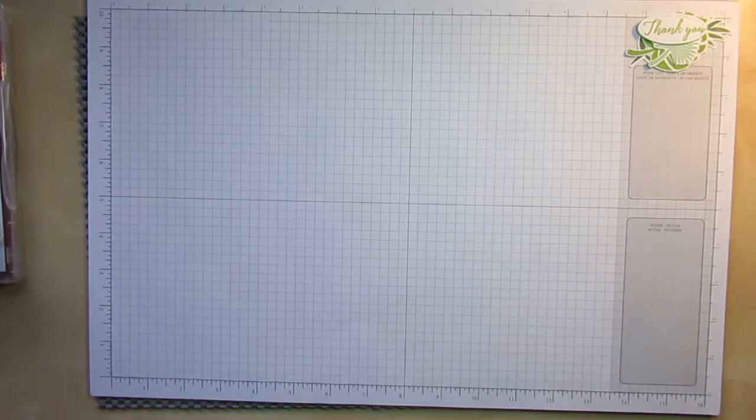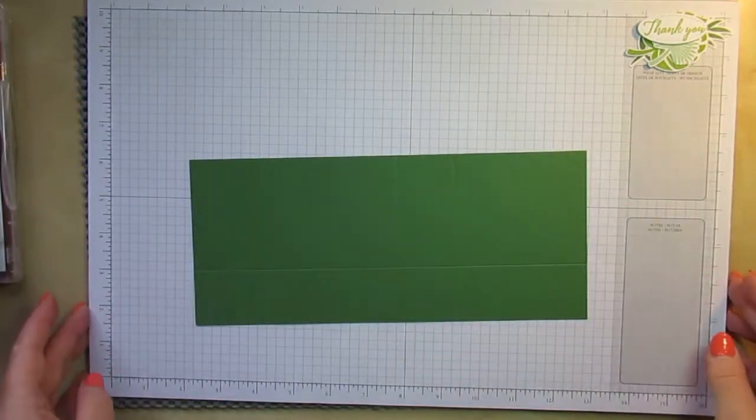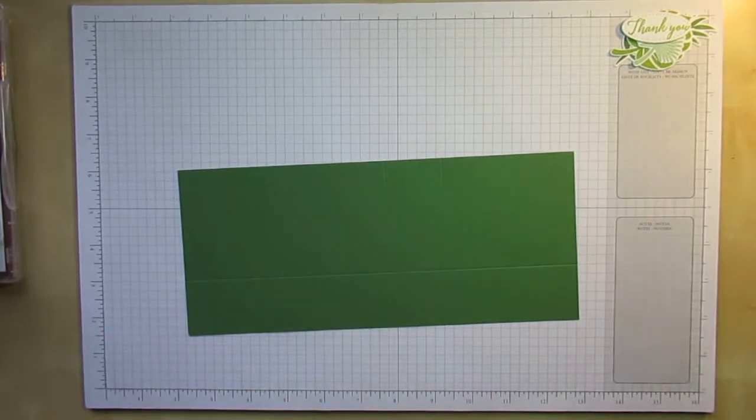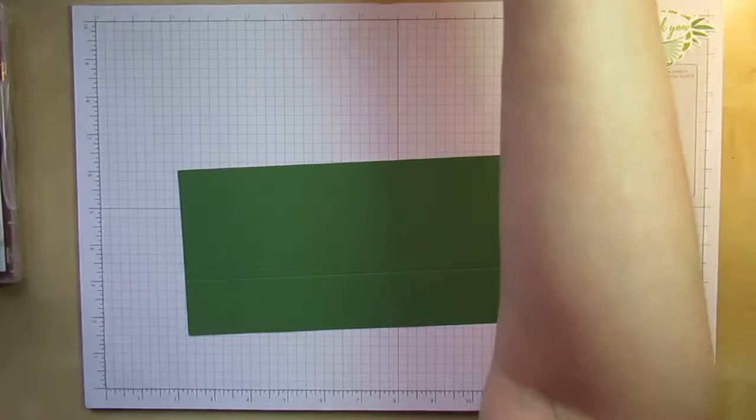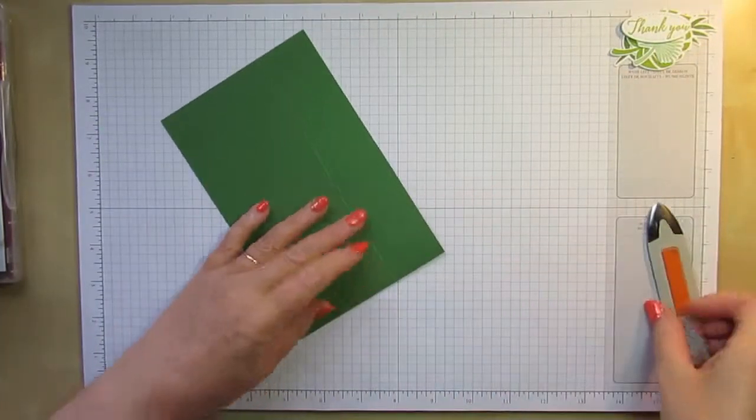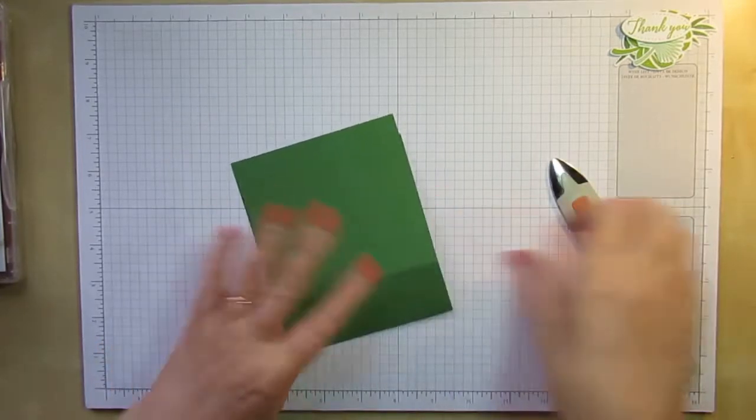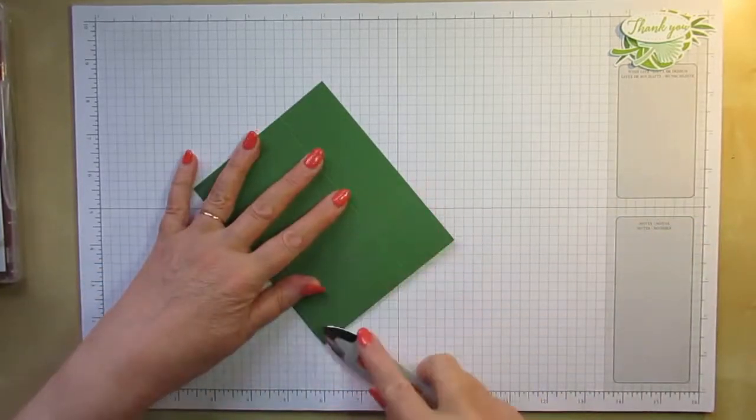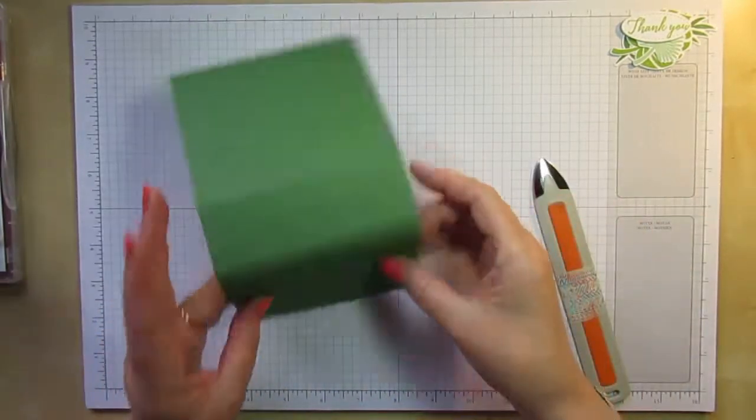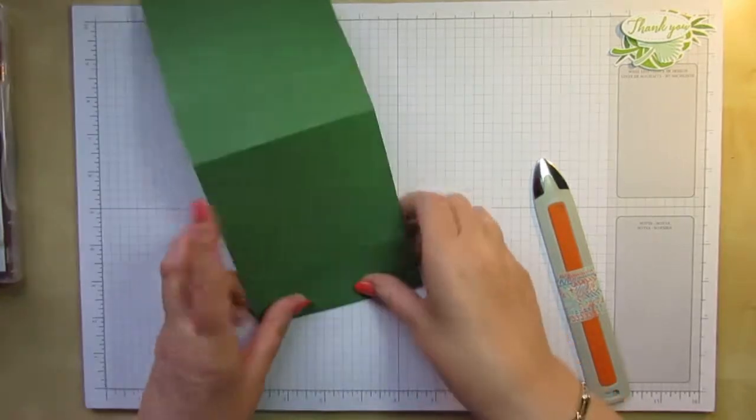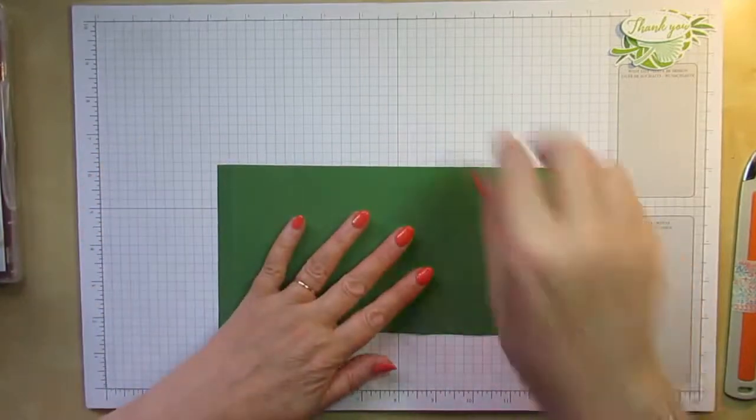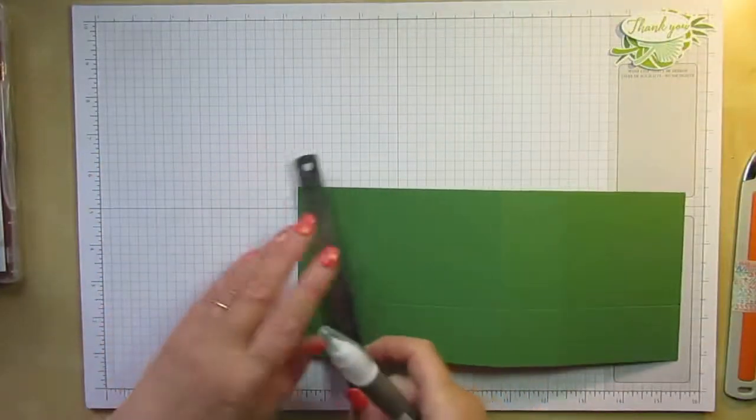So taking my scoreboard out of the way and then straightening up my grid paper again because I just moved it with my scoreboard. I'm just going to fold and burnish on all these score lines. Just making sure it's all straight. And I probably should have put in my triangular score lines before I did all my burnishing, but that's okay. I'll do them before I score the bottom.